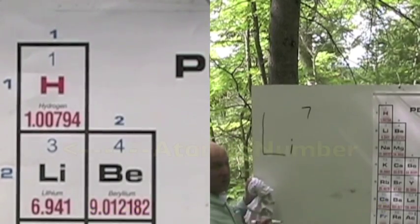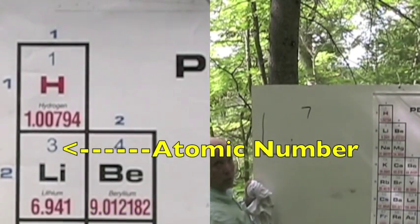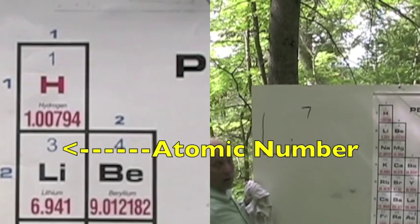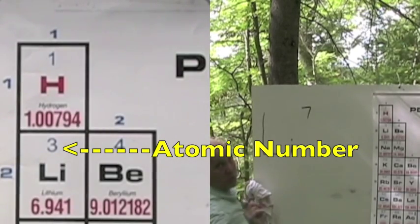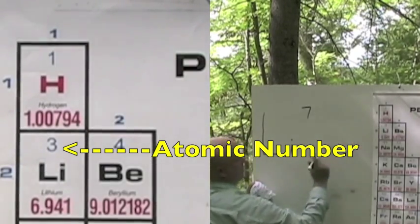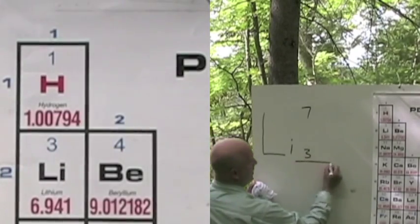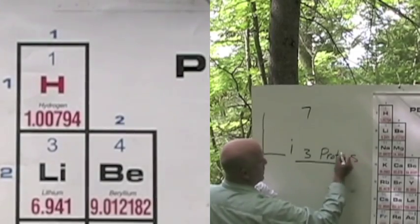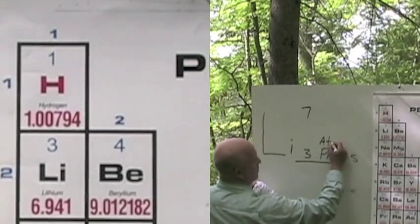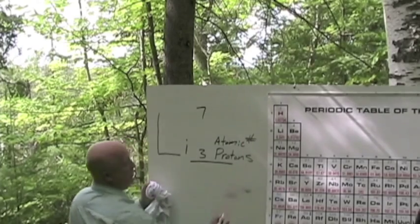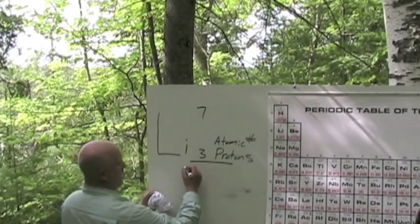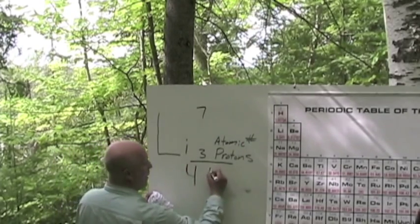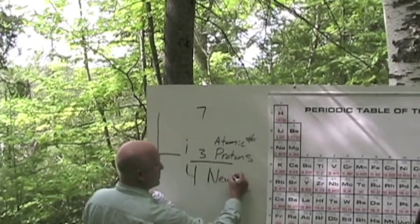The atomic number is this number here that's in blue. It's going to look different on different periodic tables, but the number is going to be the same. Atomic number is 3. That tells us that we have 3 protons. So 7 minus 3 is 4, so we have 4 neutrons.